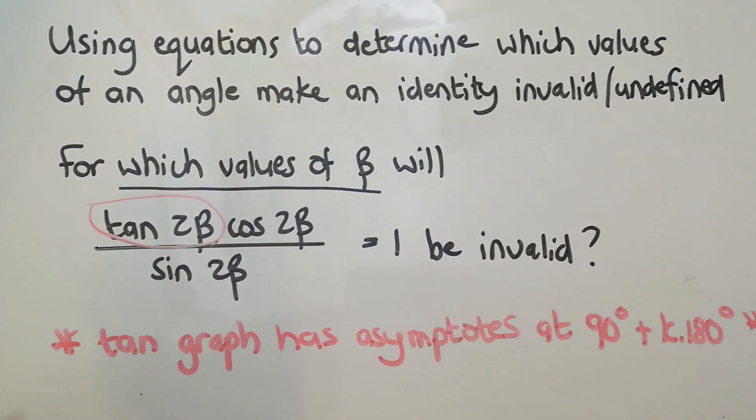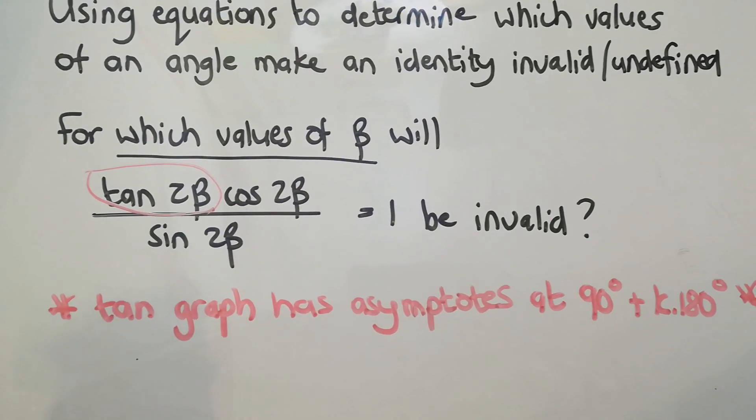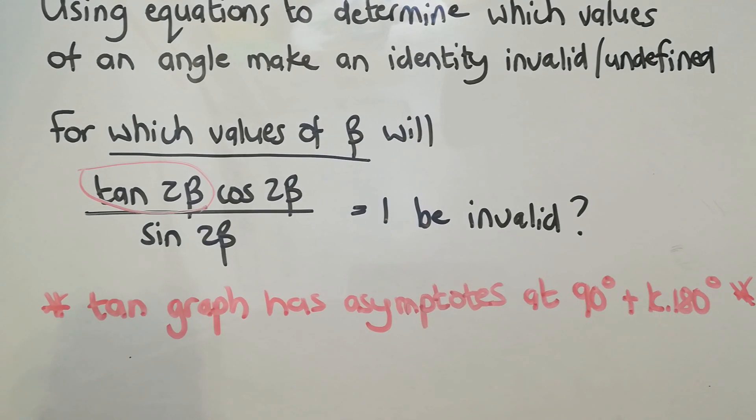And we start off by looking for that. So you always check, is there a tan? And if there's a tan, let's just go and figure out what's going to make it invalid. And then the counterintuitive part is you're going to be writing an equation for what you say is invalid.